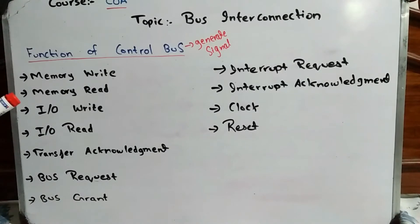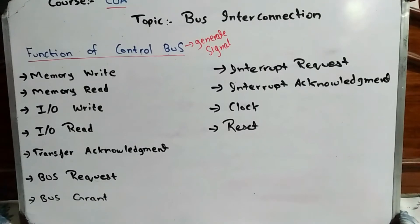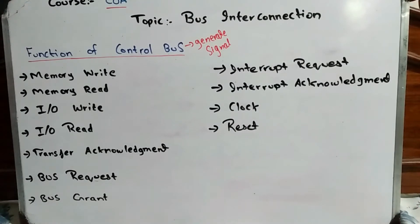The second function is memory read. If you want to read data from memory, the address bus will travel to the memory location where you want to read the data. Then the data will travel on the data bus, and you will perform further working.